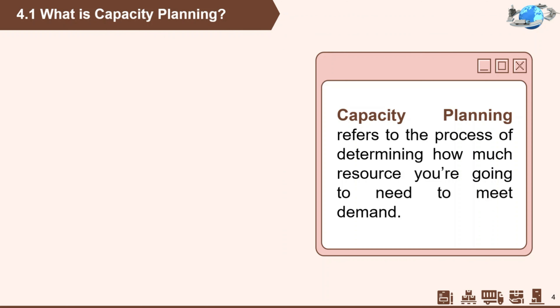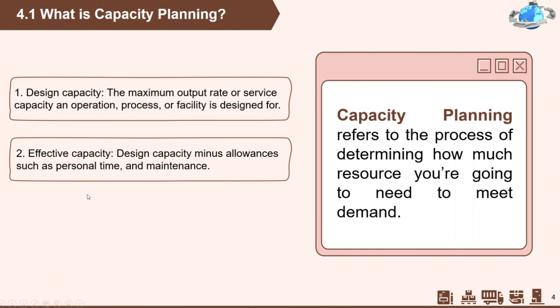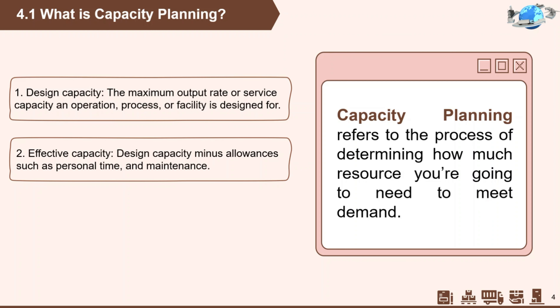Up to this point we have been using a general definition of capacity, although it is functional. It can be refined into two useful definitions: design capacity and effective capacity. Design capacity is the theoretical maximum output a system may produce in a specific time frame under perfect circumstances. On the other hand, effective capacity is the maximum outcome that the firm can produce within a particular period, based on constraints such as quality, handling of materials, and delays — so it is the real outcome of the firm.